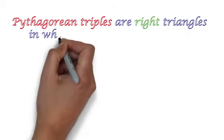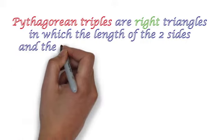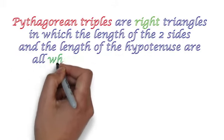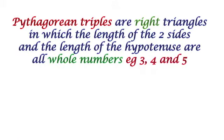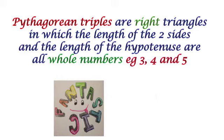So Pythagorean triples are right triangles in which the length of the two sides and the length of the hypotenuse are all whole numbers. So three, four, and five are called Pythagorean triples.